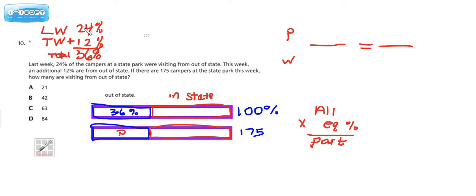Now, if we take the total that they had last week, and they're talking about an additional 12% for this week, that means we really have a total of 36% for this week. If we put that in a tape diagram, 36% to just approximate how big that chunk would be, that means the balance of the folks would be in state because that's the out of state folks. And if we're talking about all of everybody, that's 100%.